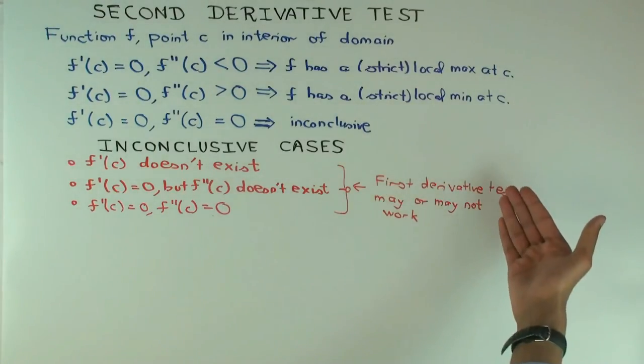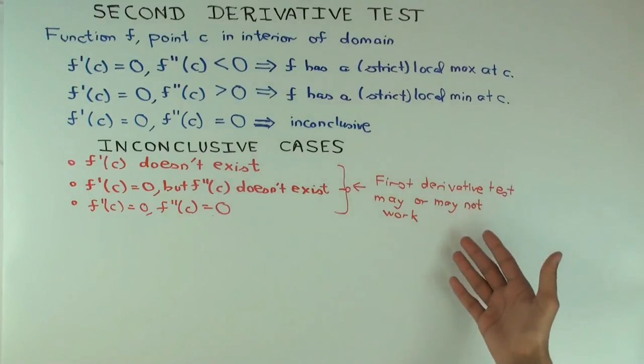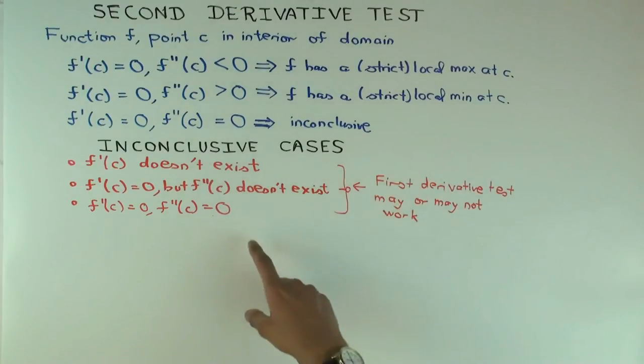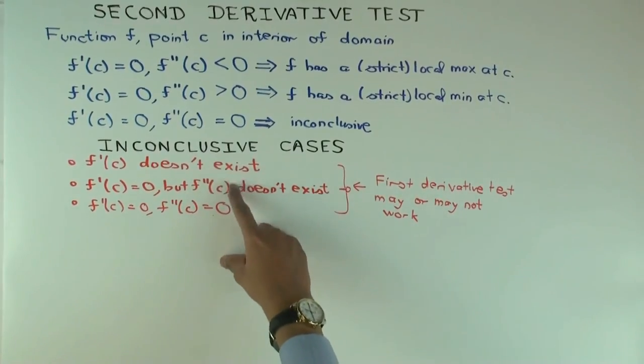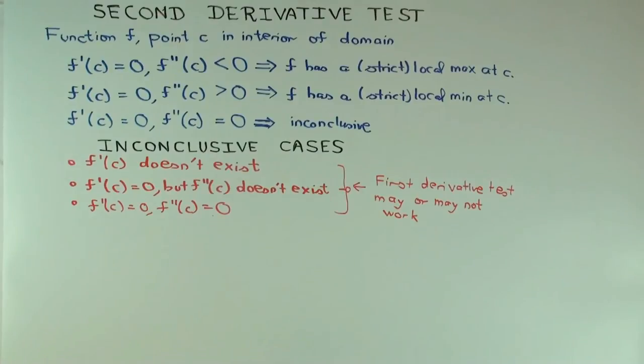It can only establish positive results about local extreme value. It cannot establish that you don't have a local extreme value. So, that's another limitation. If you actually don't have a local extreme value, you'll land up in one of these three inconclusive cases, or this.